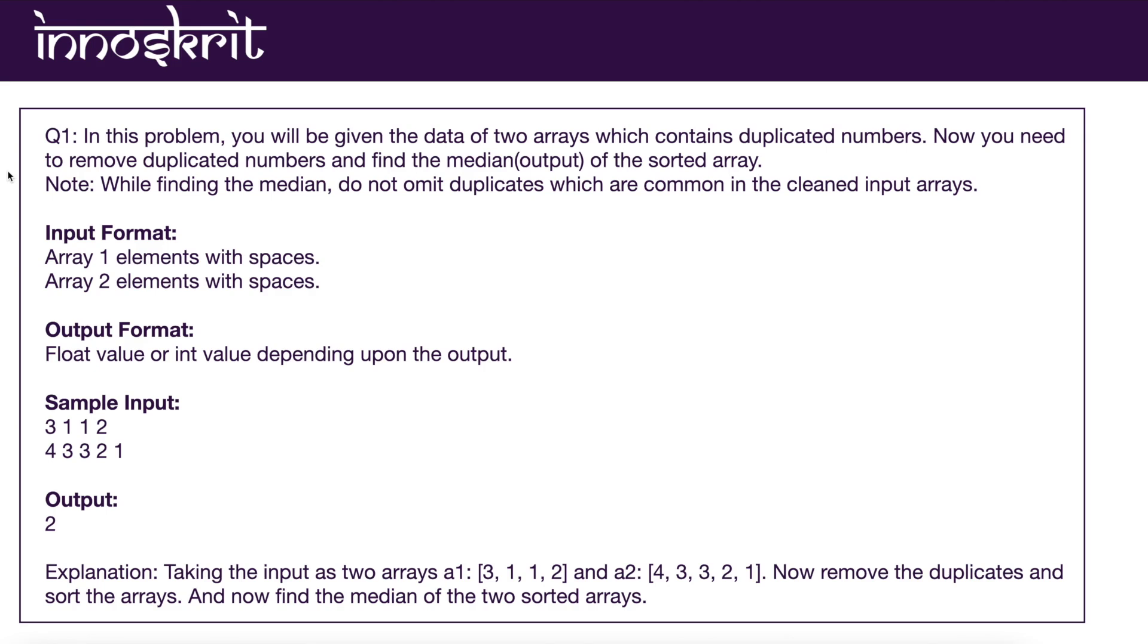If you are given the choice between float and int, then definitely you will be keeping the return type of the function as float. Let's look at the sample input: 3 1 1 2 and 4 3 2 1. You can directly see that in the first array, one is the duplicated element. In the second array, two is the duplicated element. So first, we will remove the duplicated elements.